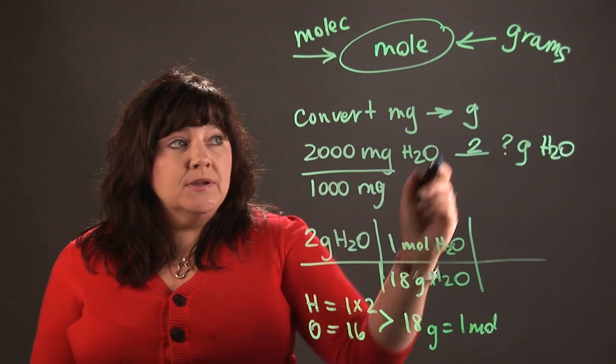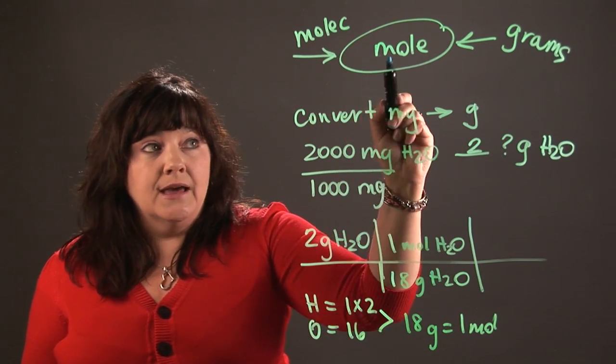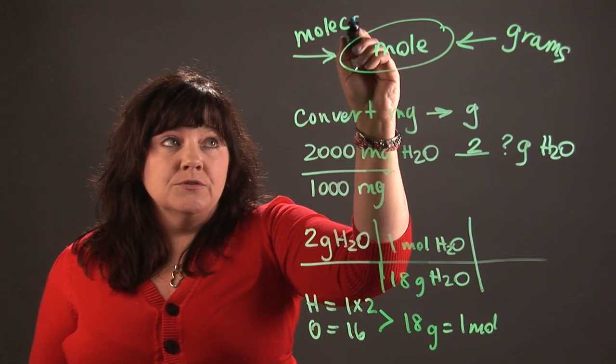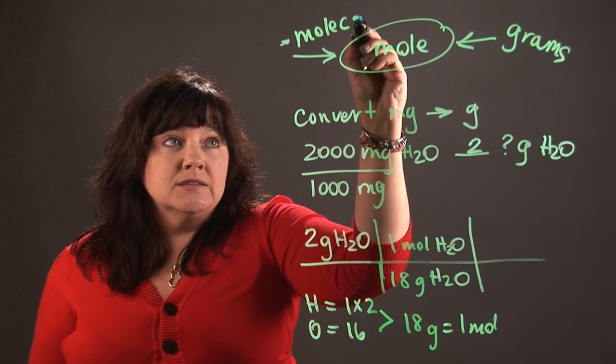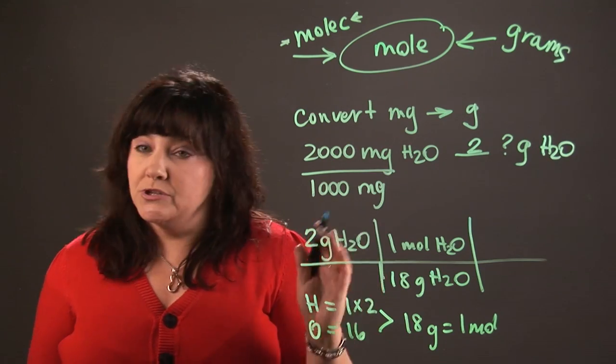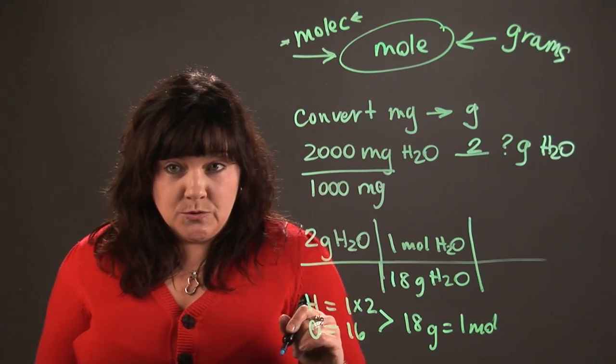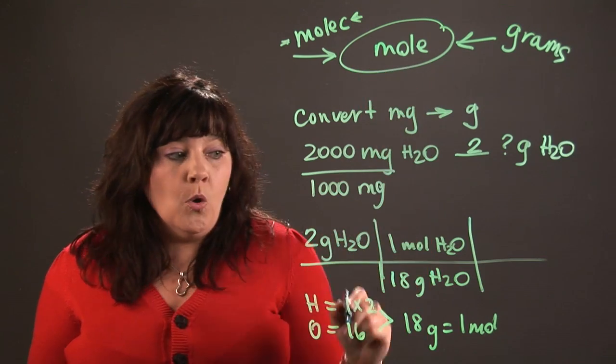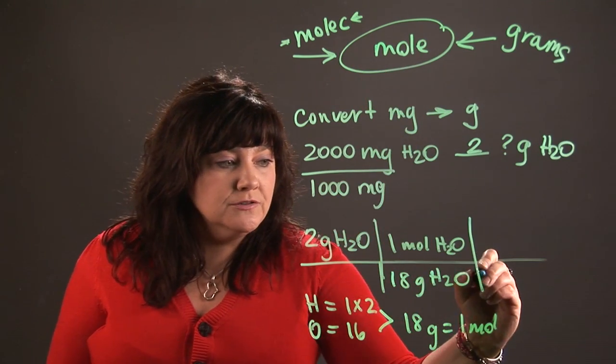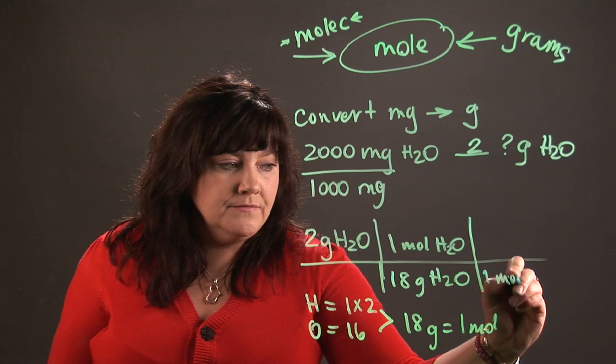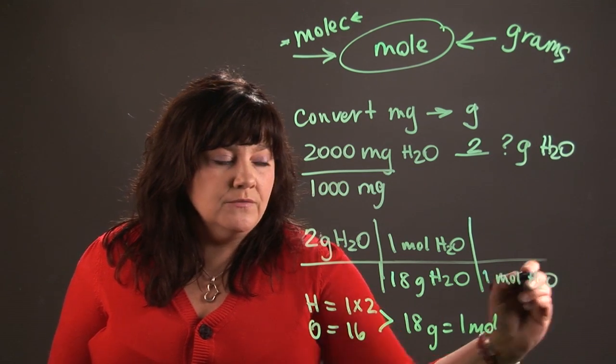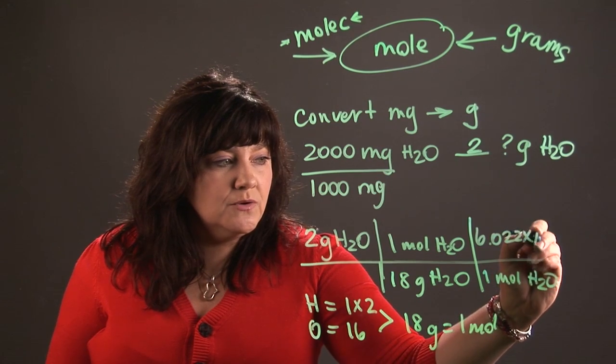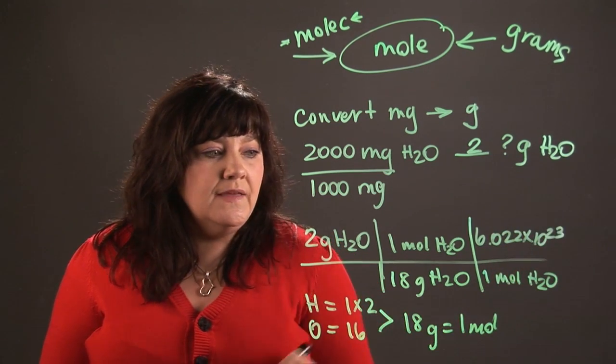One more step, because remember I wanted to know how many molecules I had, not the number of moles. So for that, to know molecules I have to know about something called Avogadro's number, which is a big number, 6.022 times 10 to the 23rd. That's the number of molecules that are found in one mole. All right, so remember a mole of water is up here, so I'm going to have to put it down here so I can cancel those out. And I have to put that big number, 6.022 times 10 to the 23rd, in the top.